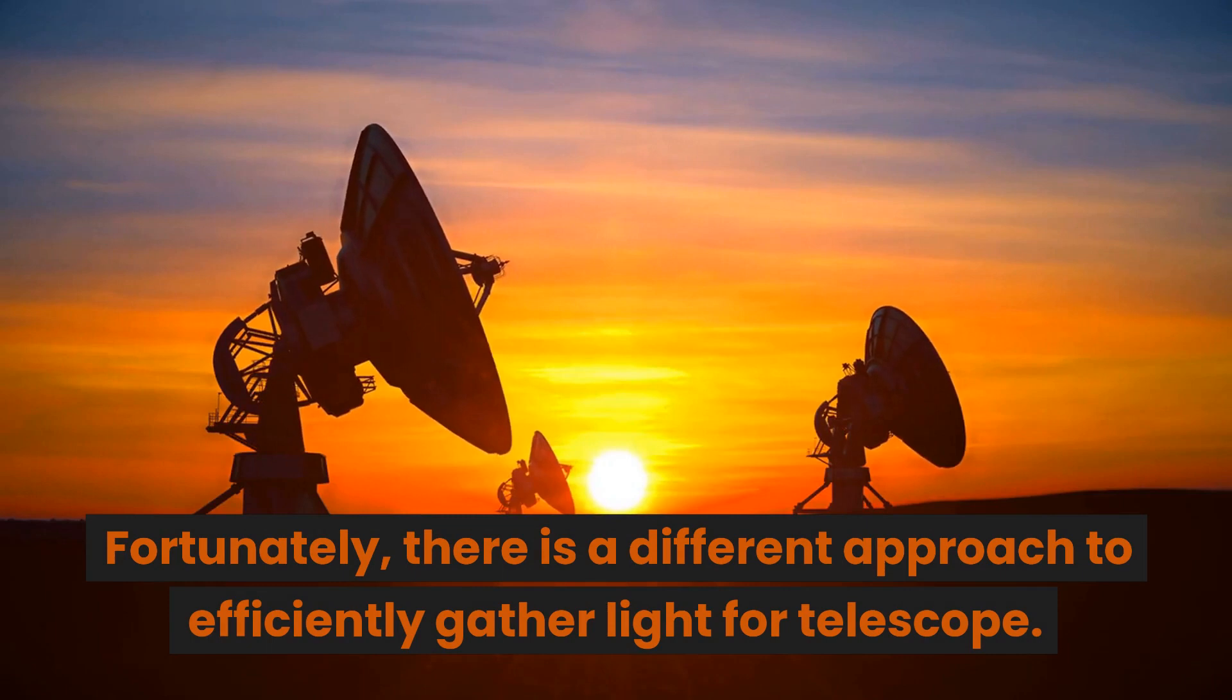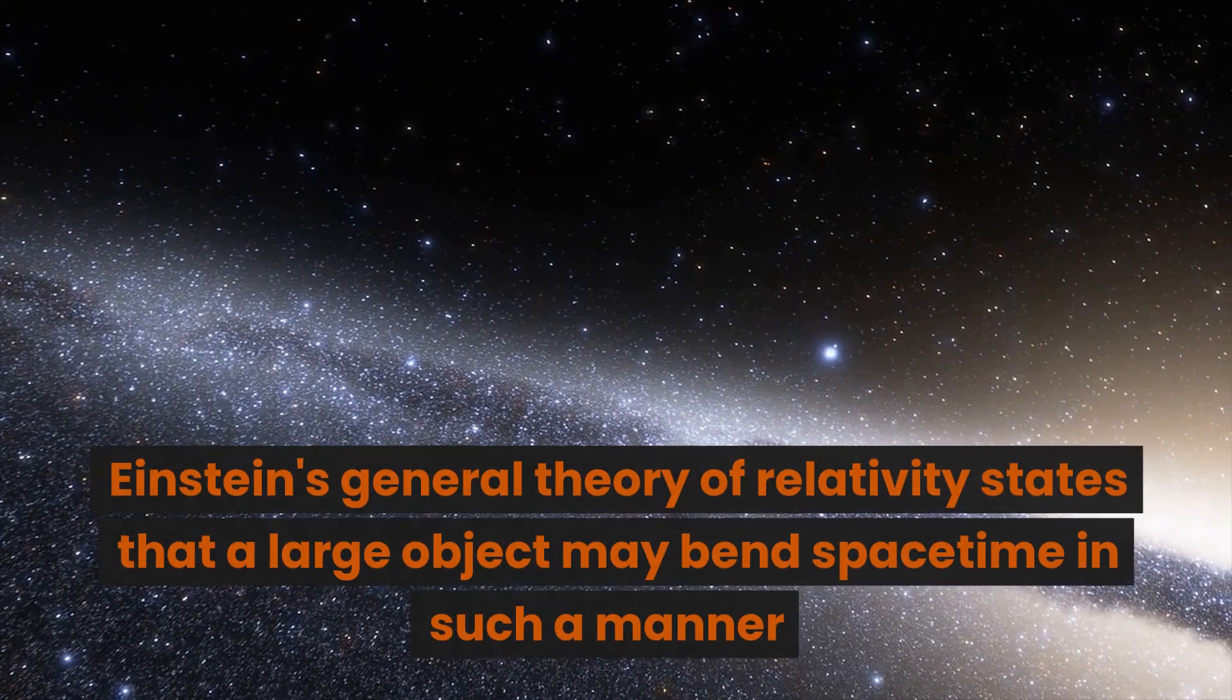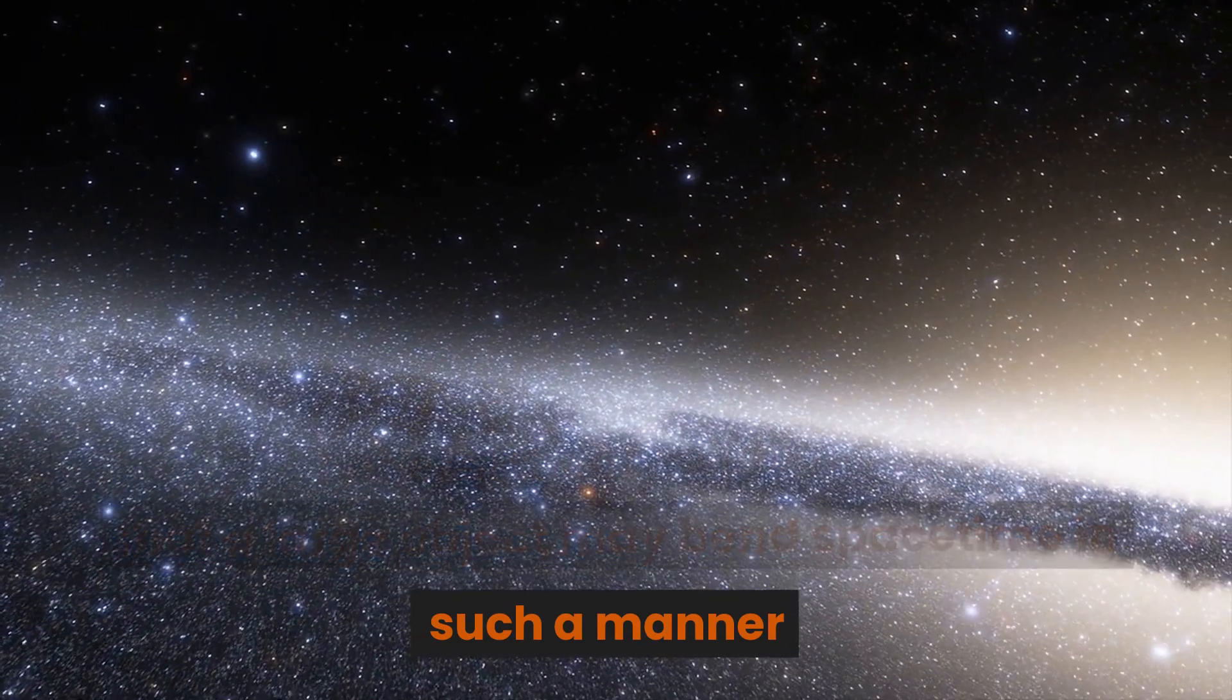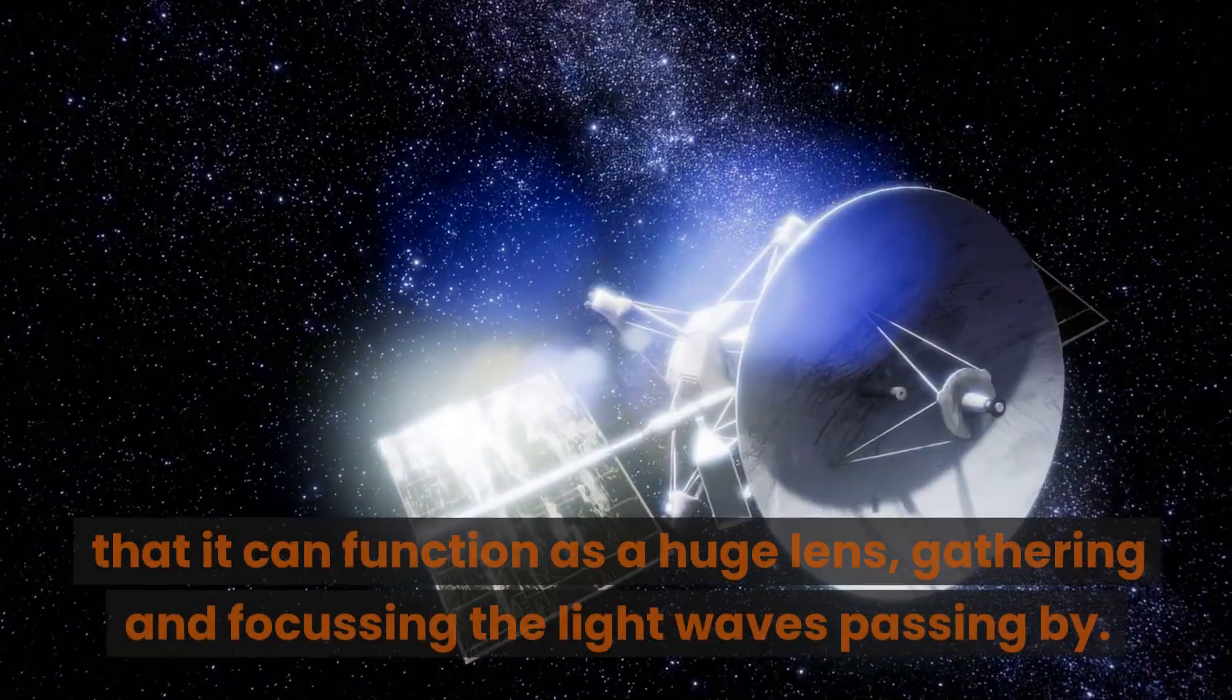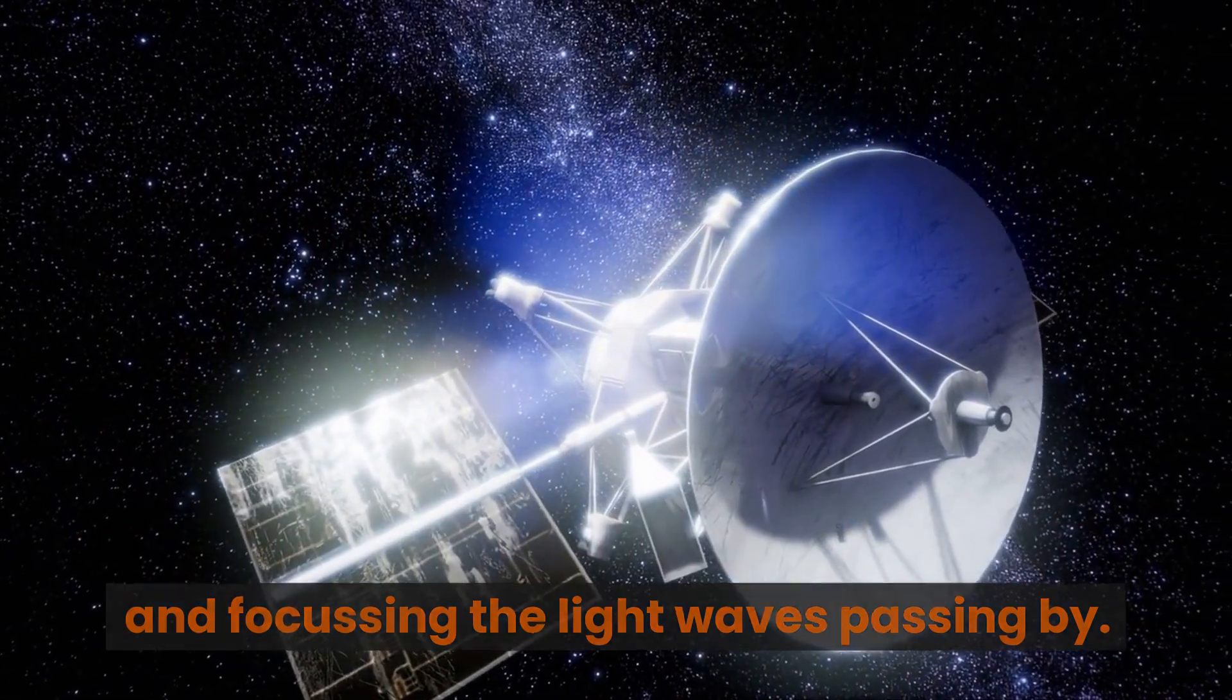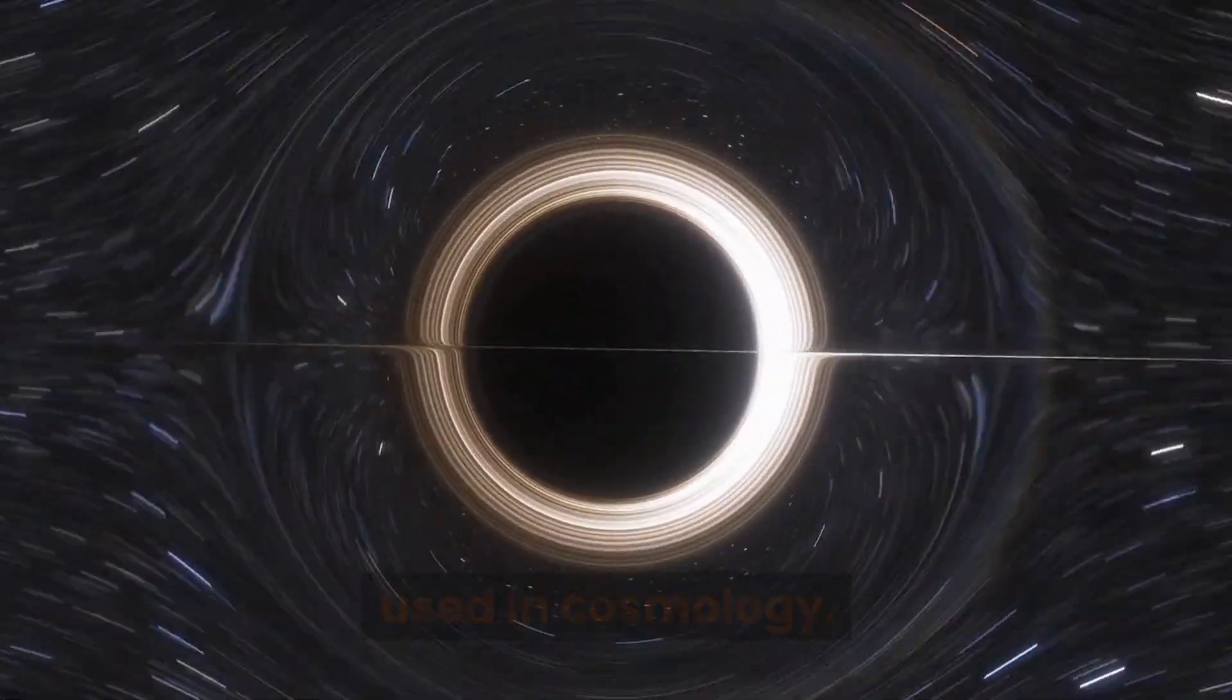Fortunately, there is a different approach to efficiently gather light for telescope. Einstein's general theory of relativity states that a large object may bend spacetime in such a manner that it can function as a huge lens, gathering and focusing the light waves passing by. These gravitational lenses are now routinely used in cosmology.